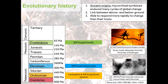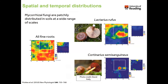When I started working on mycorrhizas during my PhD, I was really interested in spatial patterns of organisms — how things change in space and over time. My PhD work looked at spatial processes in ectomycorrhizas. On the left is the distribution of all fine roots within a 20-by-20-meter plot of a Scots pine forest, and on the right you can see where the ectomycorrhizal fungi of different species are distributed within that root system.